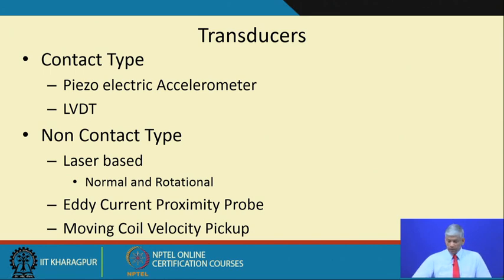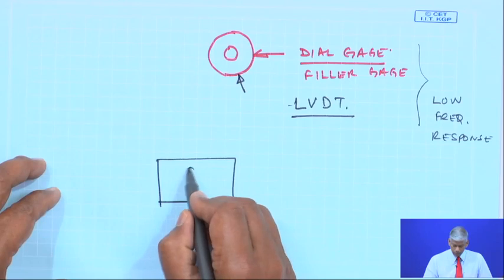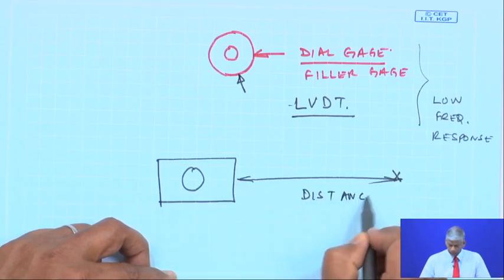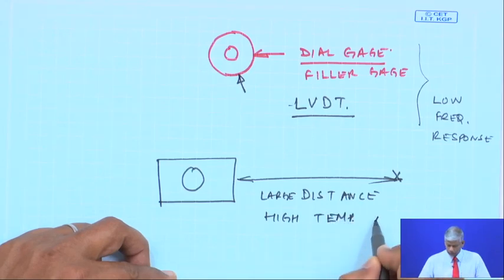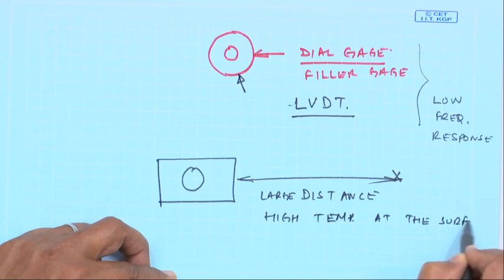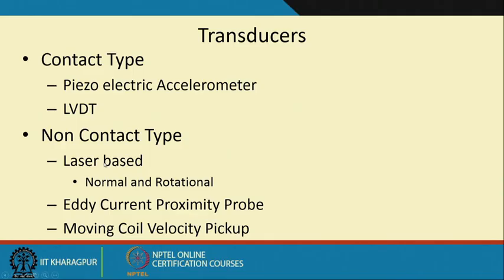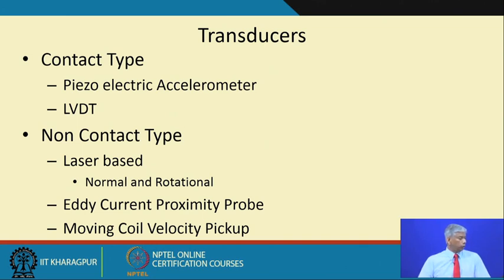However, an LVDT requires a contact stylus to make contact with the surface. There will be scenarios where you are at a large distance from the machine, or where there is high temperature on the surface — these are cases where contact-type displacement or acceleration transducers cannot be used. So there are laser-based techniques for normal or rotational measurements, and the eddy current proximity probe or moving coil velocity pick-up which are used as alternatives.